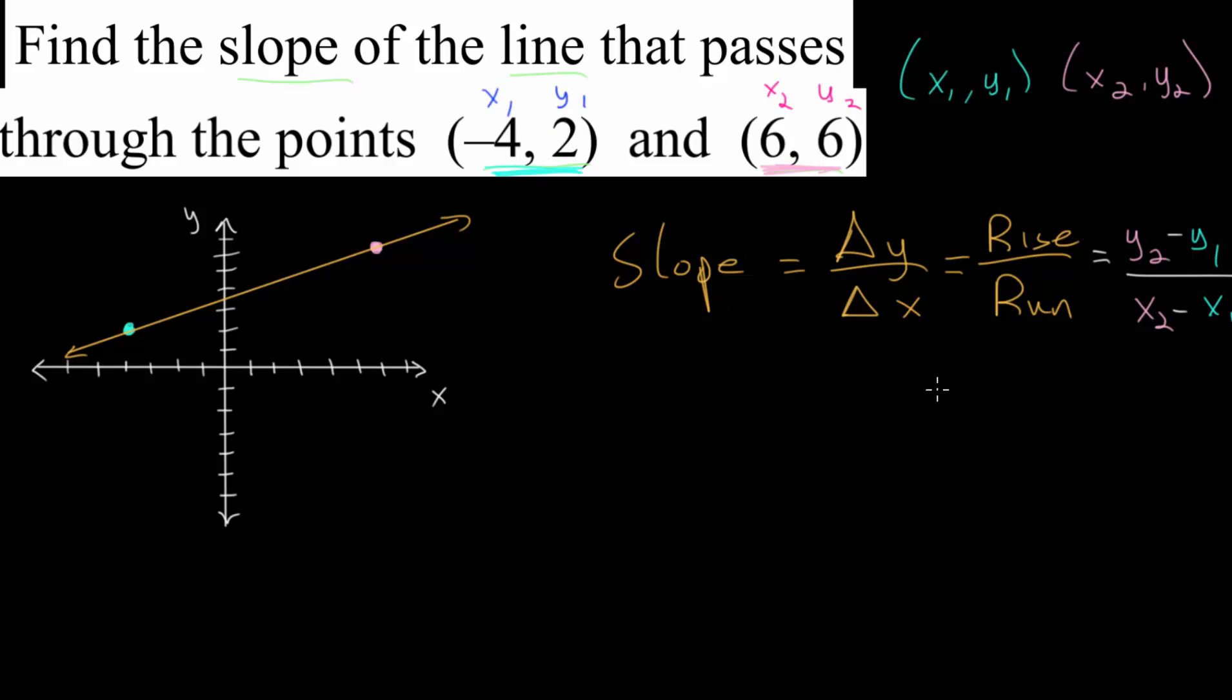So that we have our slope being equal to y2, which is 6, minus y1, which is 2. And we divide by x2, which is 6. And we subtract x1, which is negative 4. Be careful with your signs here, since we are subtracting a negative. 6 minus 2 is 4. And in the denominator, we have 6 minus negative 4, or 6 plus 4, which will simplify to 10. And we can divide top and bottom by 2 so that we end up with 2 fifths. And this is the slope of our line.